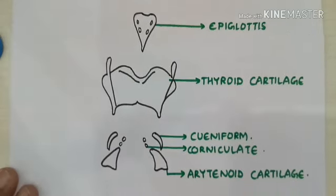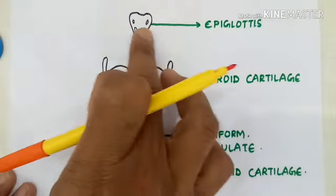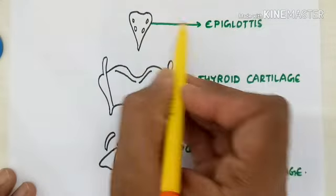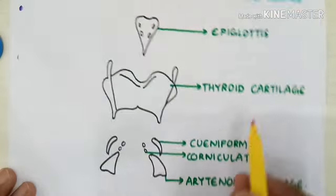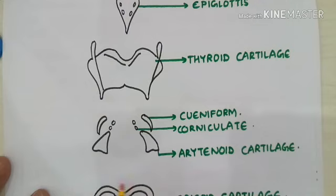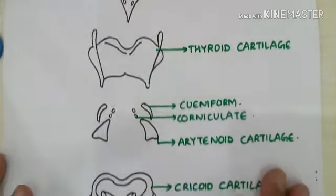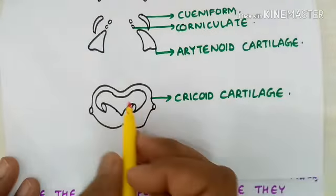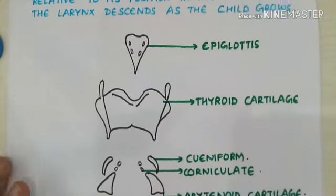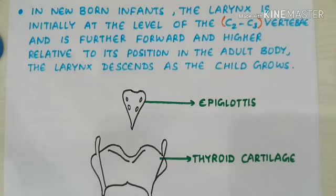Here are rough diagrams of the cartilages forming the larynx: the epiglottis, thyroid cartilage, arytenoid cartilage, corniculate cartilage, cuneiform cartilage, and the ring-shaped cricoid cartilage. This concludes our section on the larynx; the next section will cover the innervation and muscles associated with the larynx.